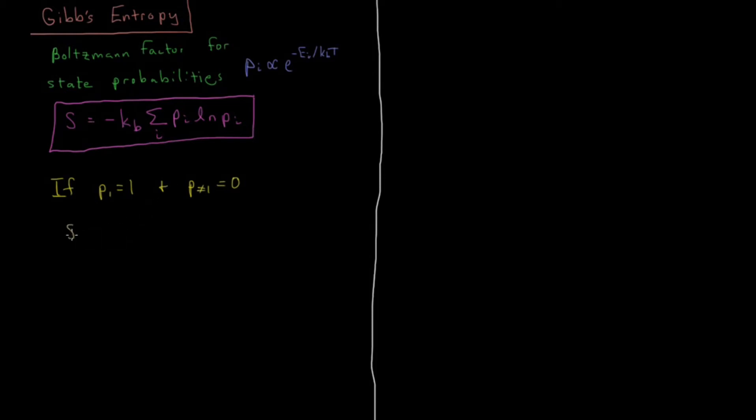Well, we'll have S equals minus kB times the sum of only over one state because all these others will have a factor of 0 multiplying their value. We're going to have 1 times the natural log of 1, but the natural log of 1 is 0, so 0 times the Boltzmann constant is going to give us 0. So if you can only be in one state, if your system is entirely specified to be in one state, then there is no disorder at all. Your absolute entropy will be 0, and the lowest entropy possible is going to be 0, so this is the least possible disorder your system can have. You know exactly which state it's in, and it is in that state and only that state.